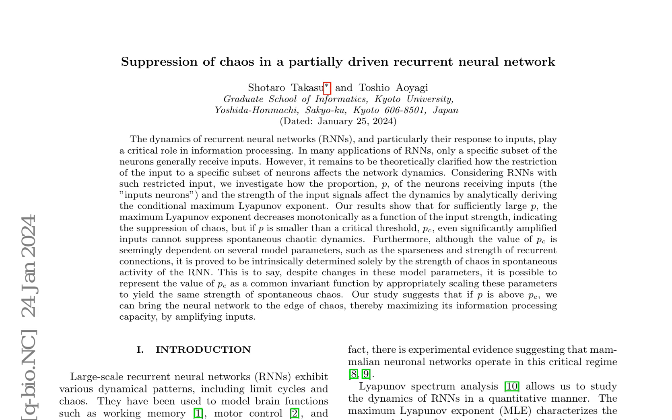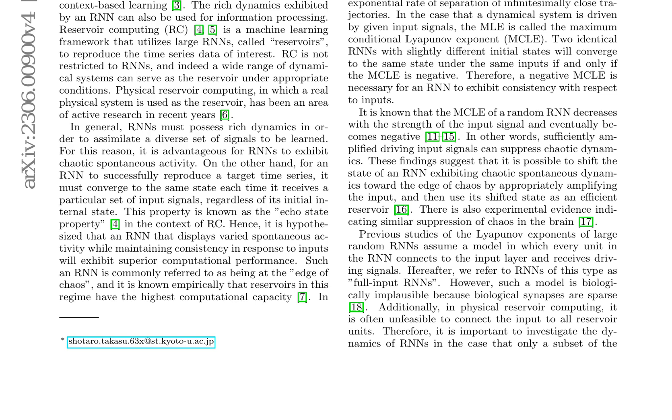However, below a critical threshold of input neurons, even amplified inputs cannot suppress spontaneous chaotic dynamics. The critical threshold is determined solely by the strength of chaos in spontaneous RNN activity, independent of other model parameters such as sparseness and recurrent connection strength. This allows the critical threshold to be represented as a common invariant function by scaling these parameters.